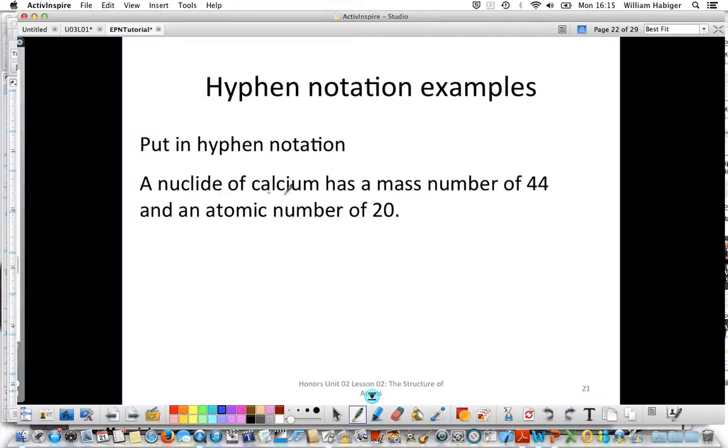So our first example, they tell us the element, so it's real simple. We write the element name, calcium, and then we put a hyphen and we put the mass number. Well, this one, they give us the mass number, so we don't have to add anything. We just have to write it down. So it's going to be calcium-44.